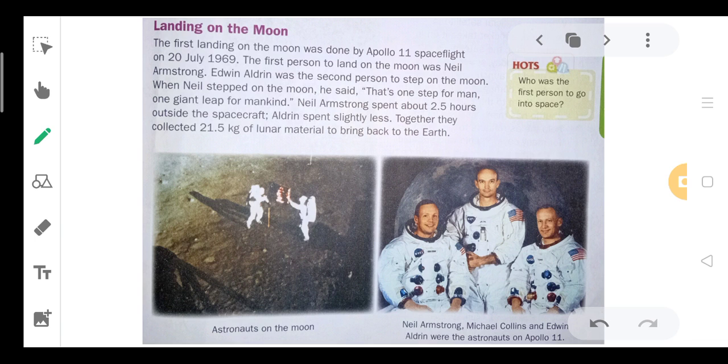The first landing on the moon was done by Apollo 11 spacecraft on the 20th July 1969. The first person to land on the moon was Neil Armstrong.